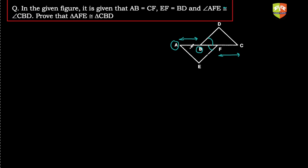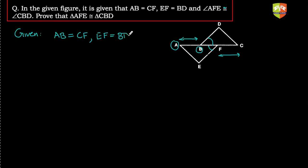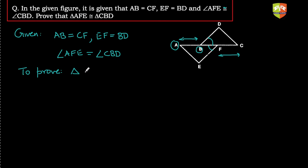We have to prove that triangle AFE is congruent to triangle CBD. Let's summarize what is given: AB is equal to CF, EF is equal to BD, and angle AFE is equal to angle CBD. This is all given, as we've seen in the diagram.